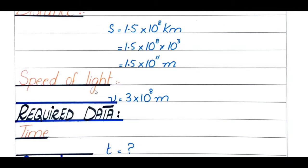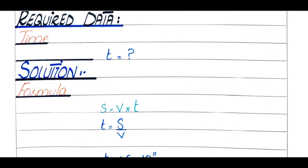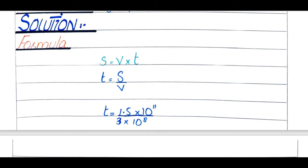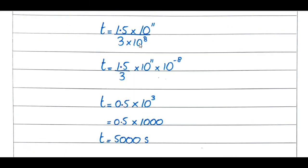Speed of light is given as 3 × 10⁸ meter per second. Required data is time. Formula: s = v × t, so t = s/v. Distance becomes 1.5 × 10¹¹ meters. Dividing: 11 minus 8 gives exponent 3, and 1.5 divided by 3 equals 0.5, so 0.5 × 10³ = 500 seconds, which equals 8 minutes and 20 seconds.